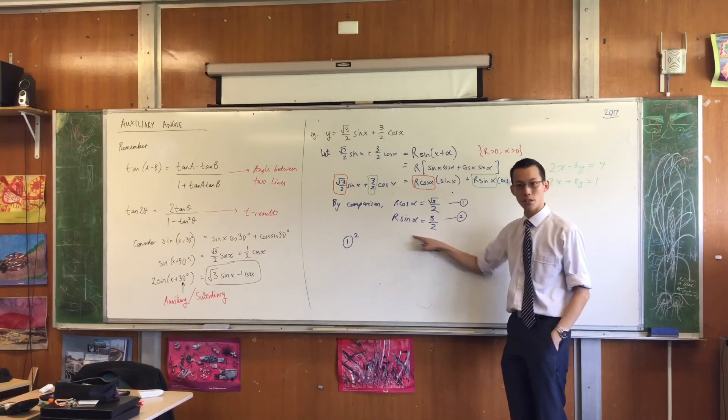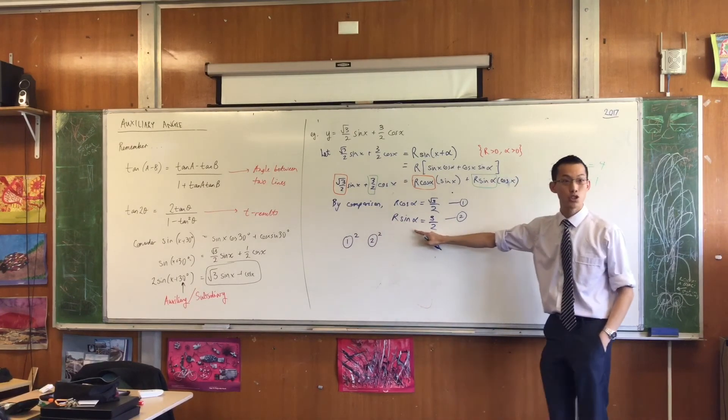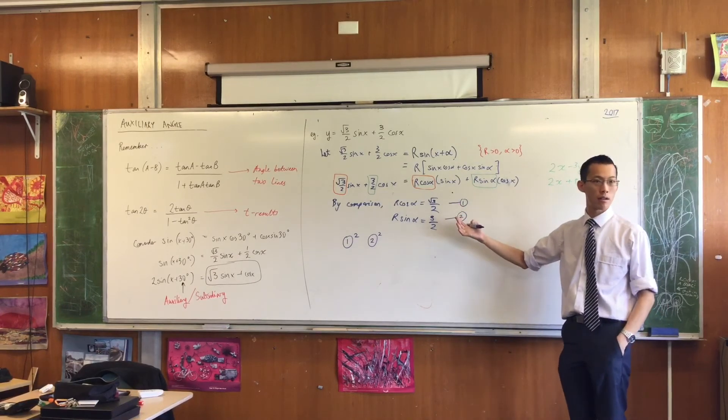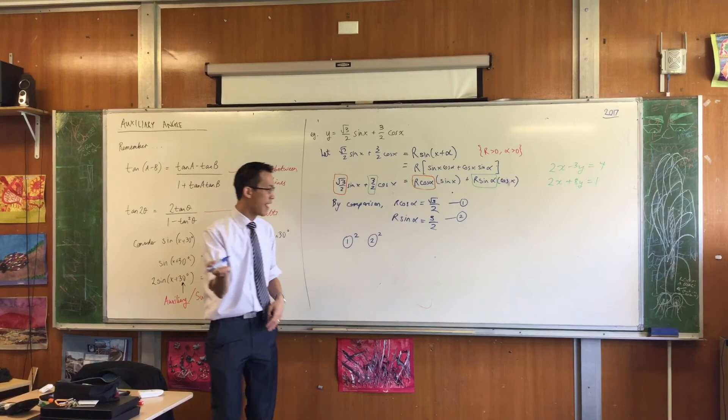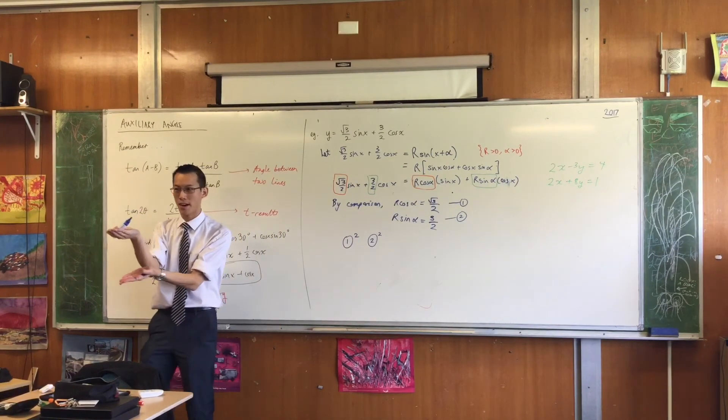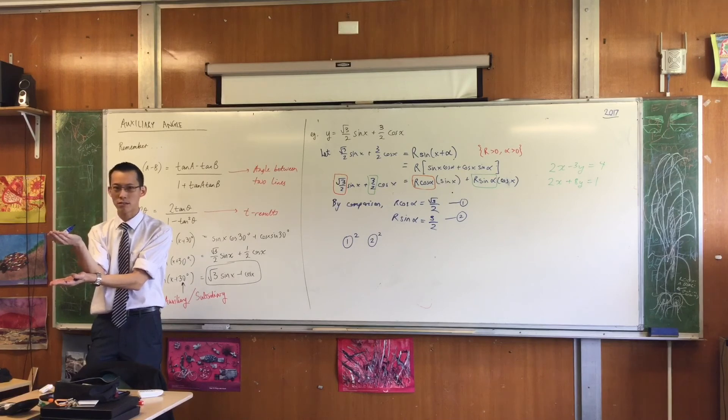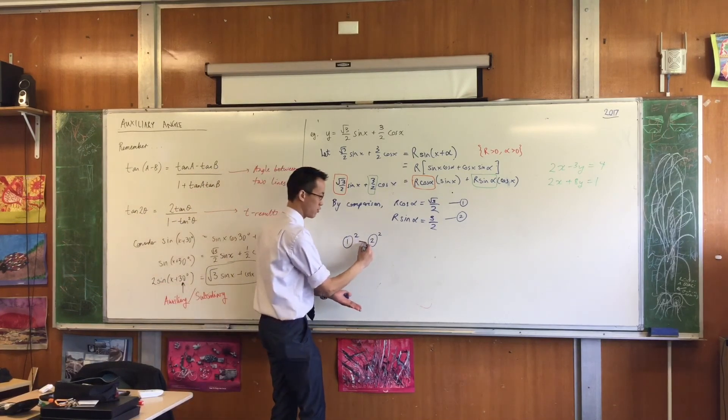I could square that. I can also square this equation. If I square number two, I'll get R² sin² α equals nine on four. Now, if I have R² cos² α and R² sin² α, now I can get rid of the alphas. How do I do it? Cos squared plus sin squared is one, provided you add them.